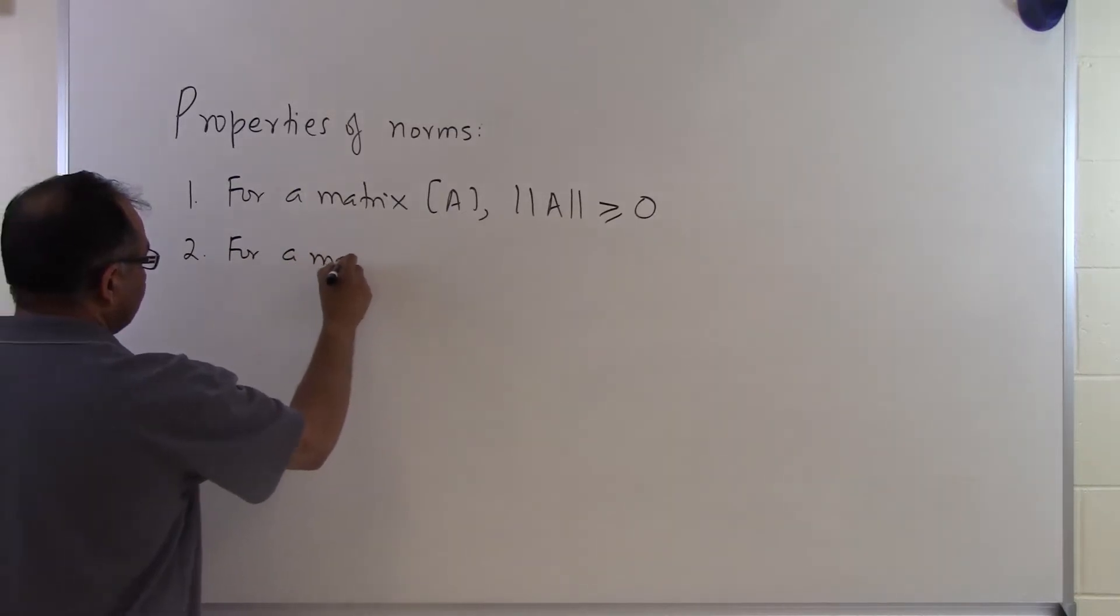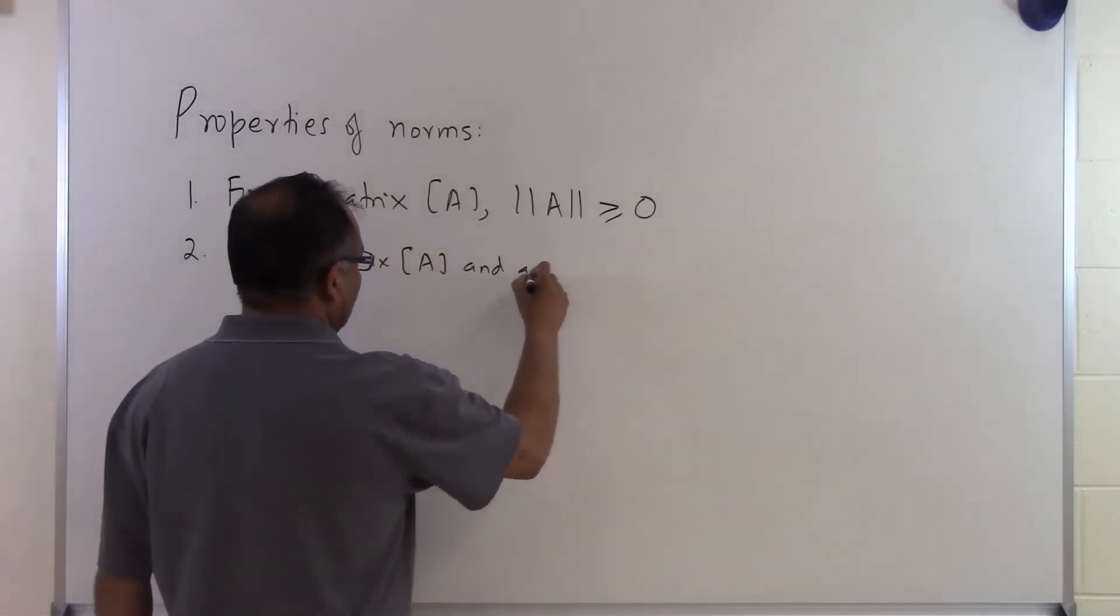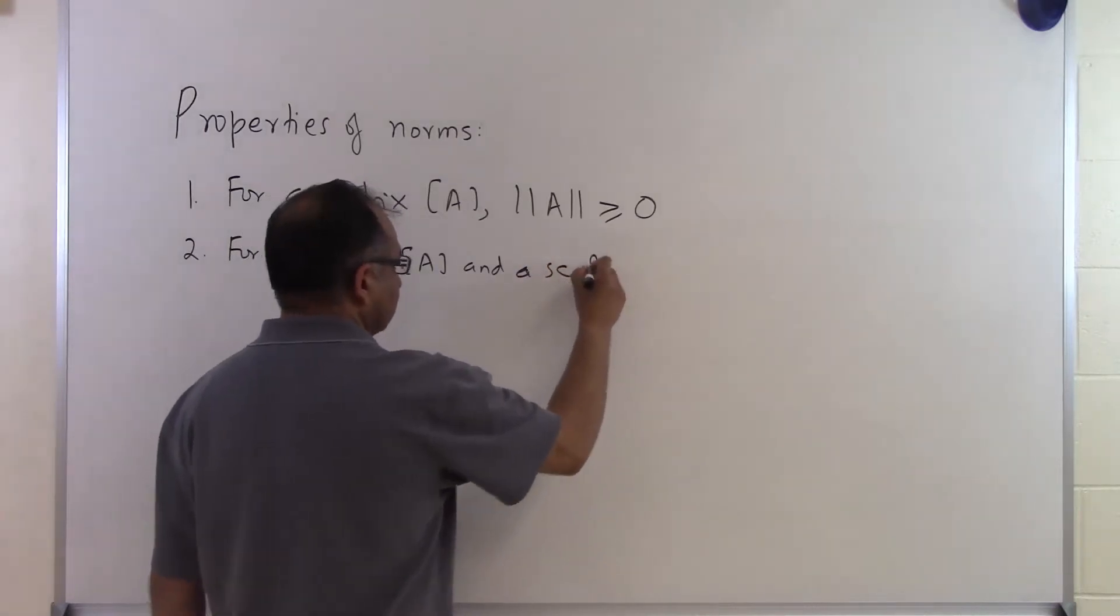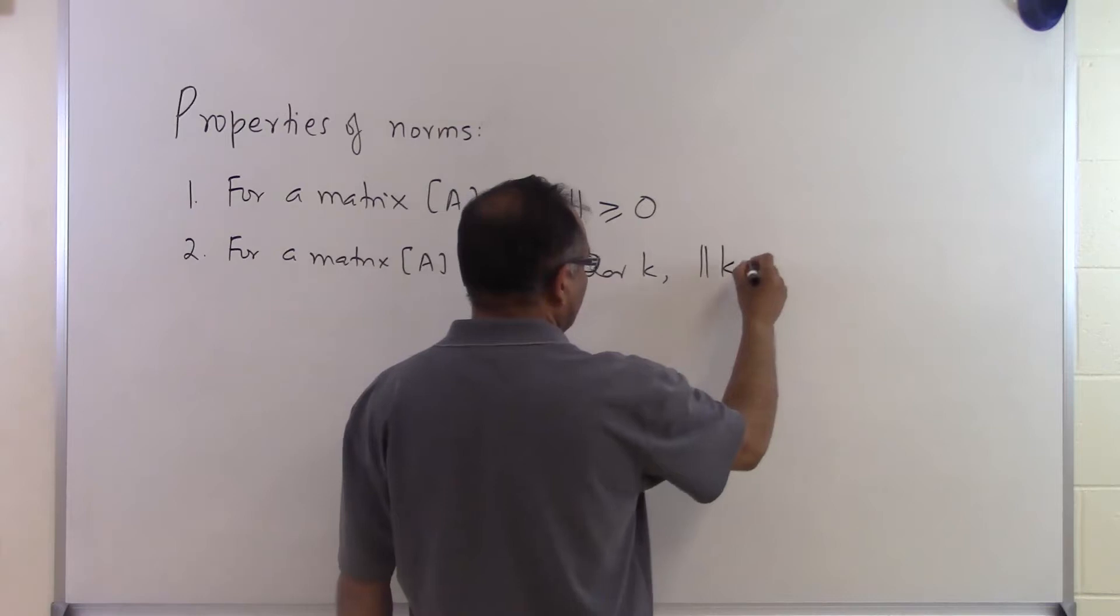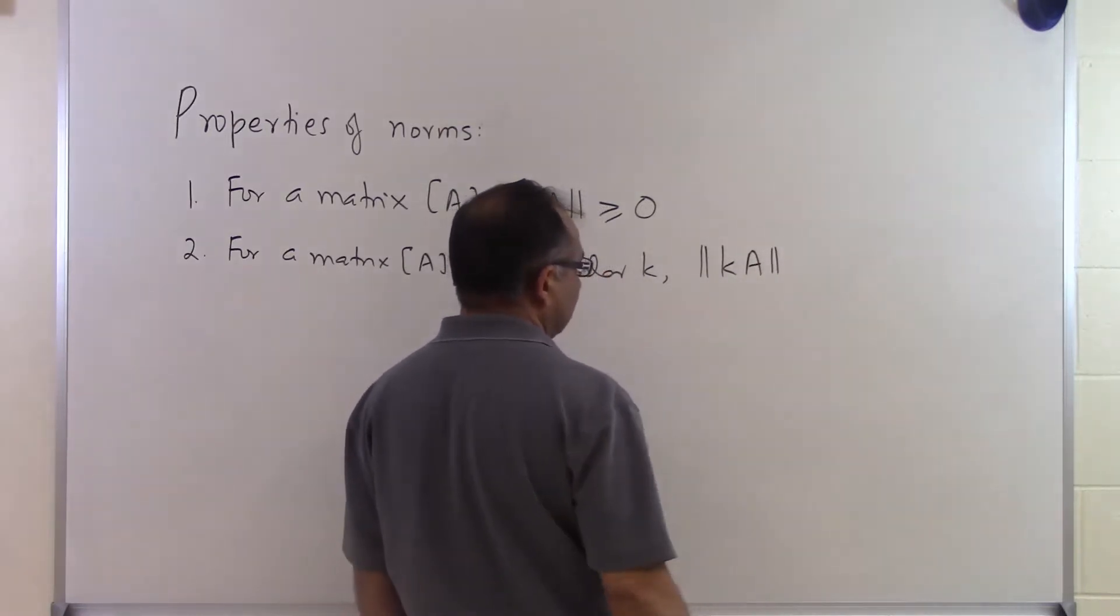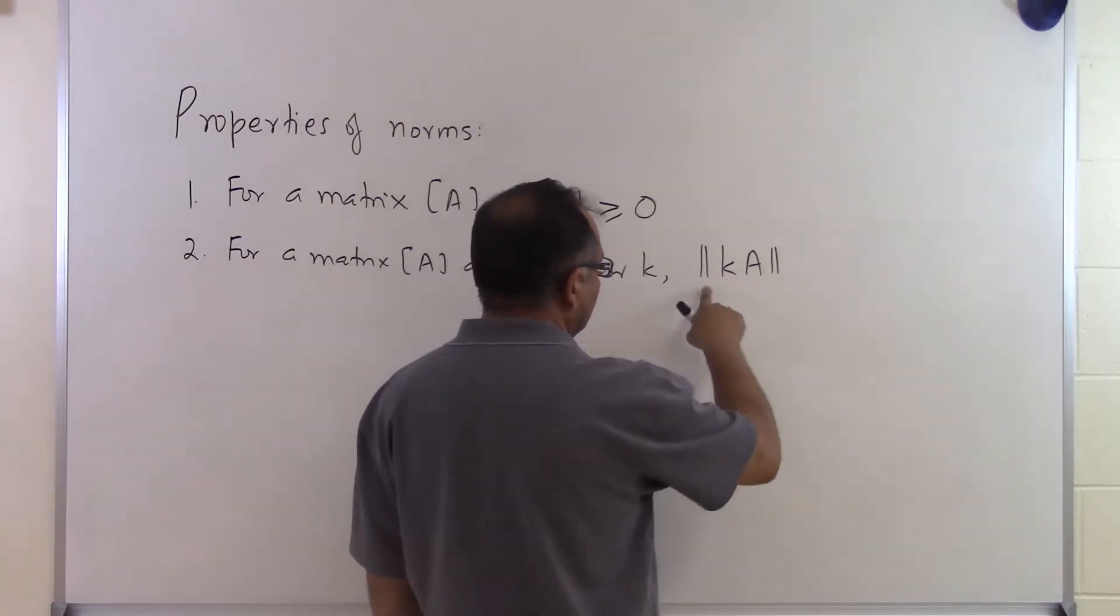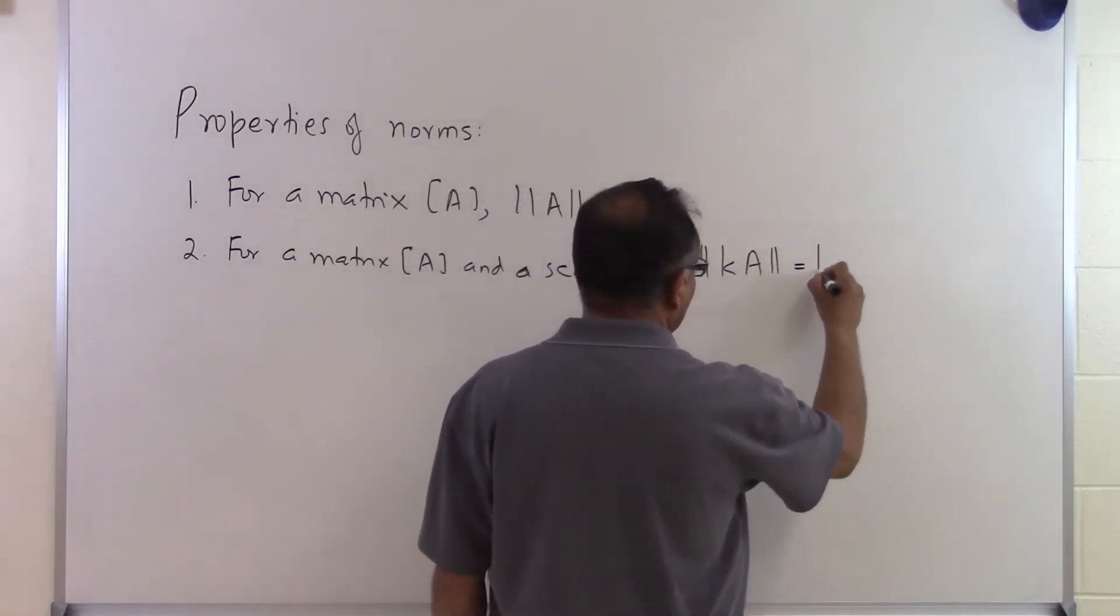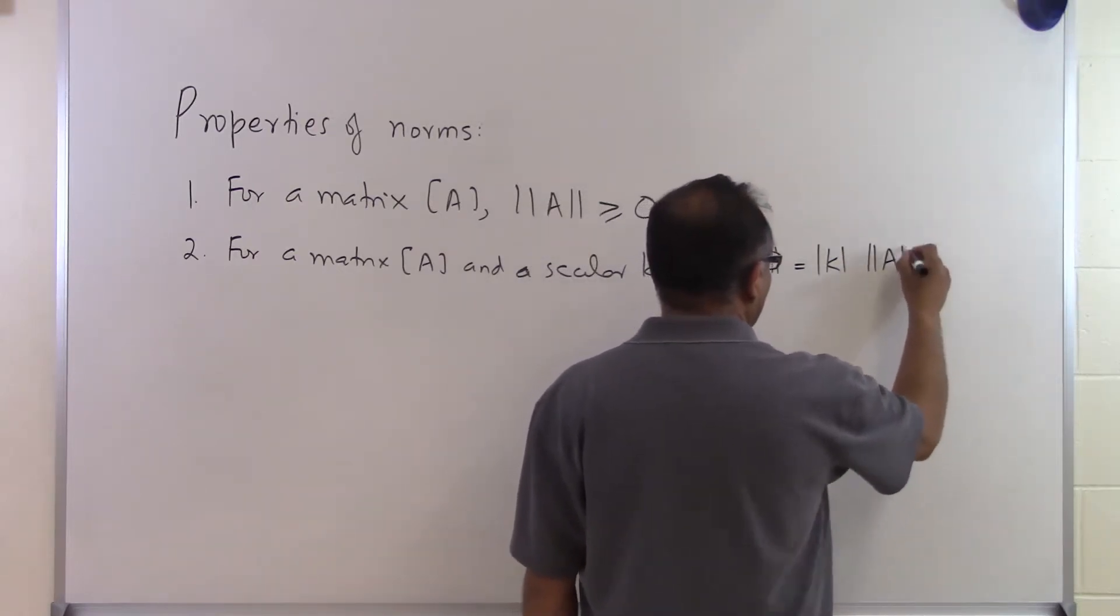For a matrix A and a scalar k, you will find out that the norm of k times A, so if you take the A matrix and multiply it by the k scalar, the norm of kA will always equal the absolute value of k times the norm of A.